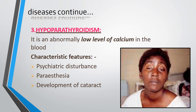The third is hypoparathyroidism — meaning a low level of calcium in the blood. Characteristic features include psychiatric disturbances, paresthesias, and development of cataracts.